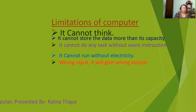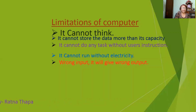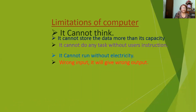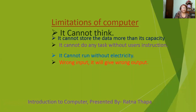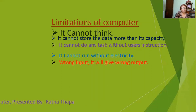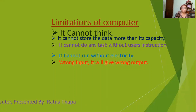Number five, wrong input will give wrong output. As you know, our computer never makes mistakes — it always gives 100% accurate output. But sometimes we get wrong output, and that is the mistake of the user's input. So always you have to give the correct instructions to the computer system.